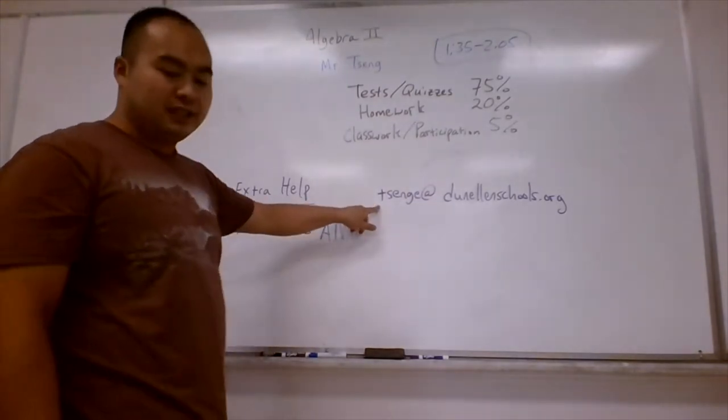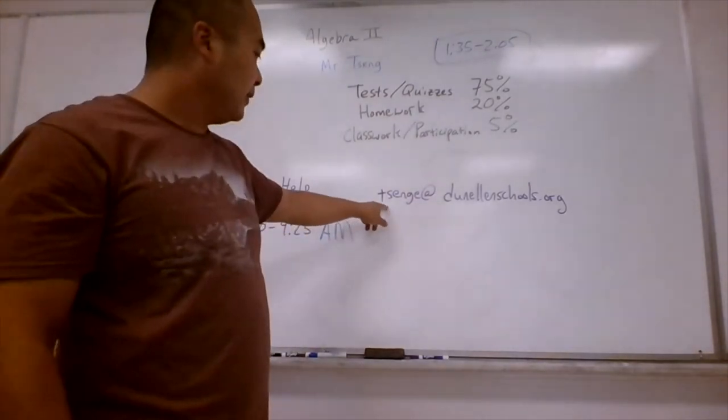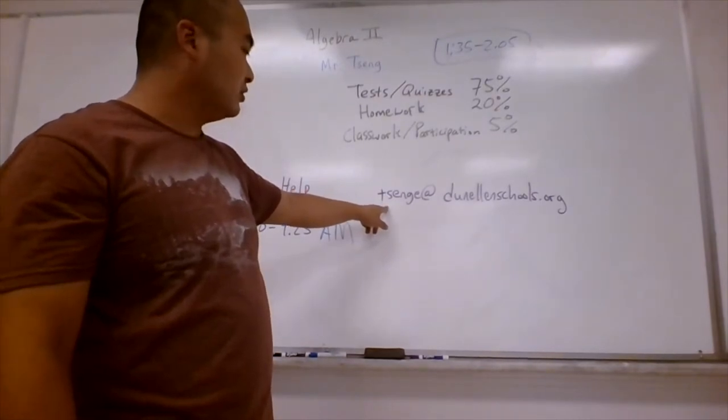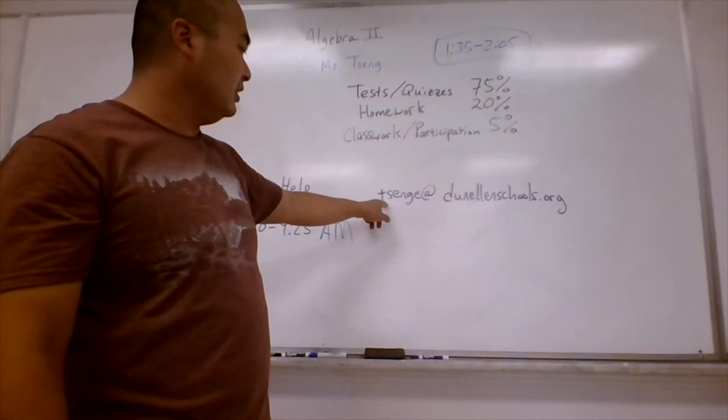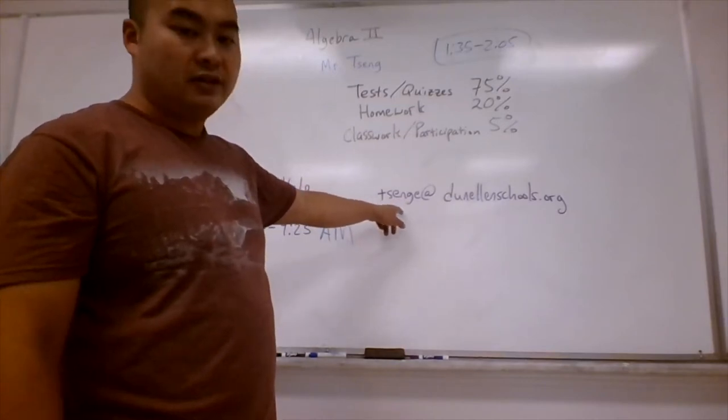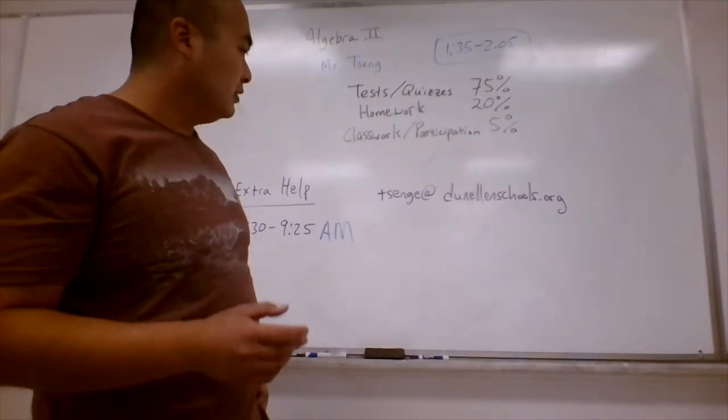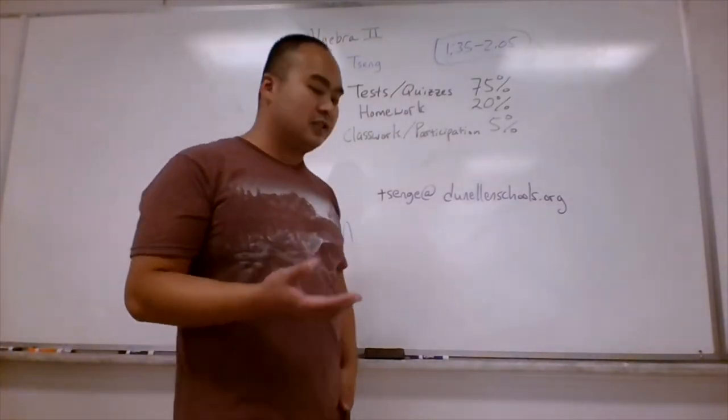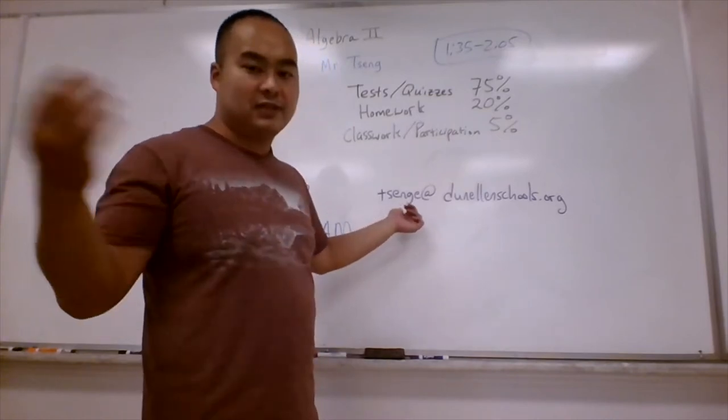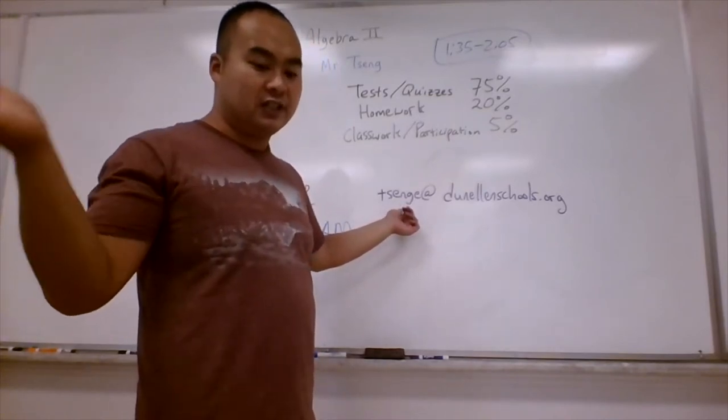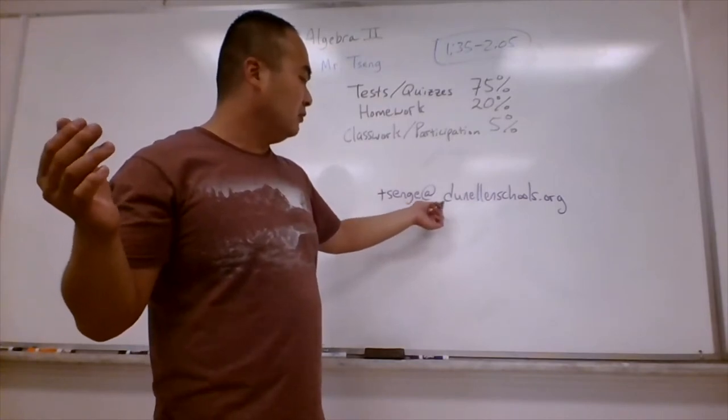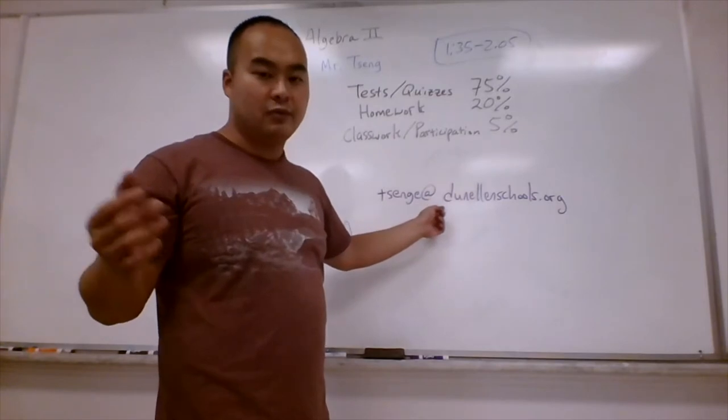The best way to reach me is through email. My email is tsenge at danellanschools.org. Once again, it's tsenge, t-s-e-n-g-e at danellanschools.org. If you have any questions about your kid's progress in my class, or their grades, or you know that they're going to be absent because of a function that they need to attend, definitely email me and we can figure out how to get your kid caught up with the work.